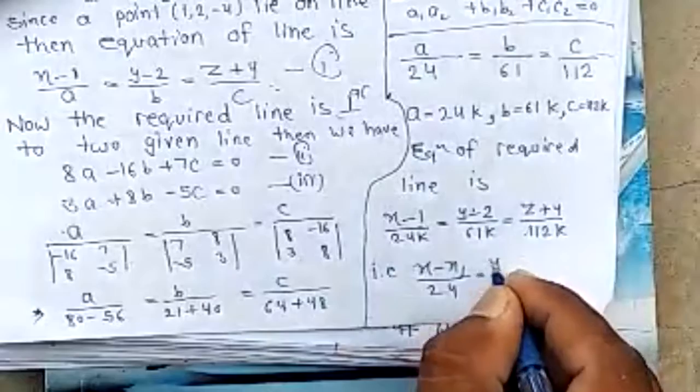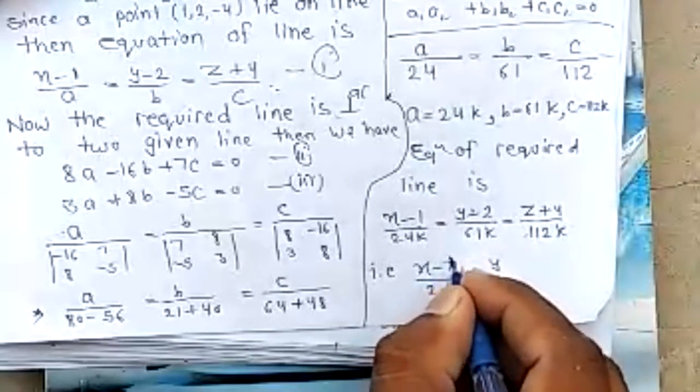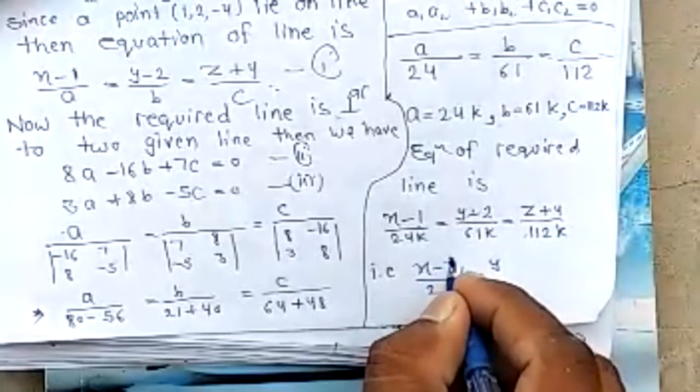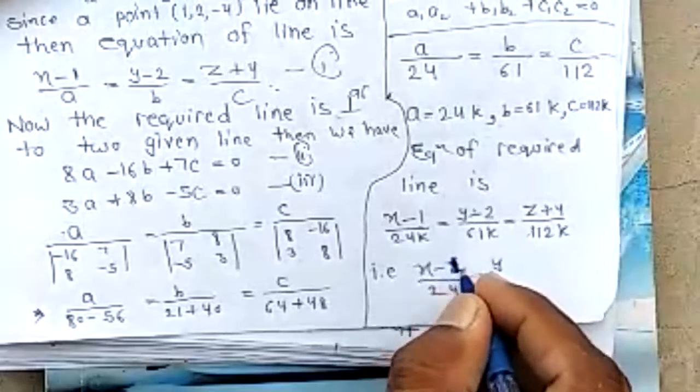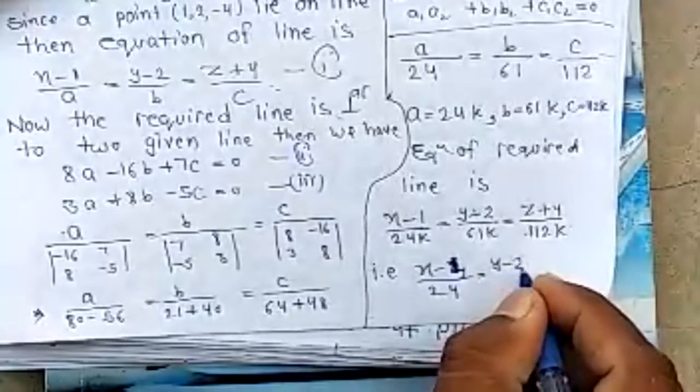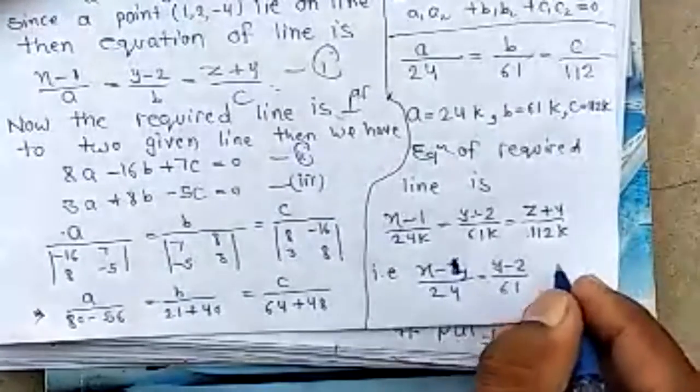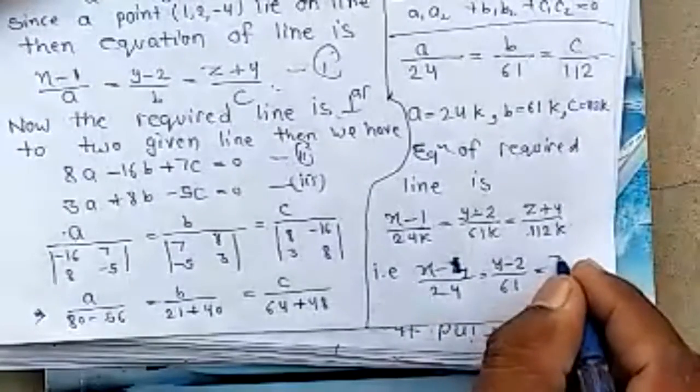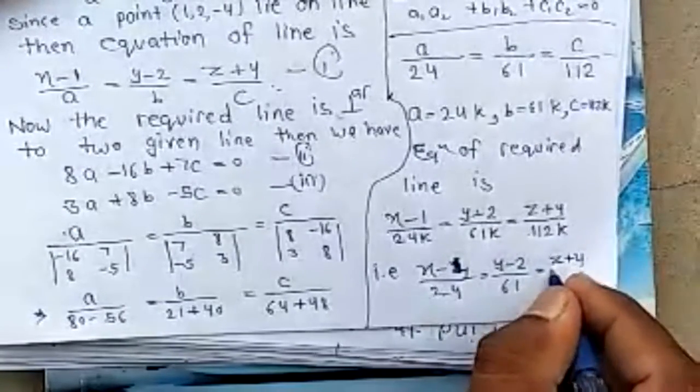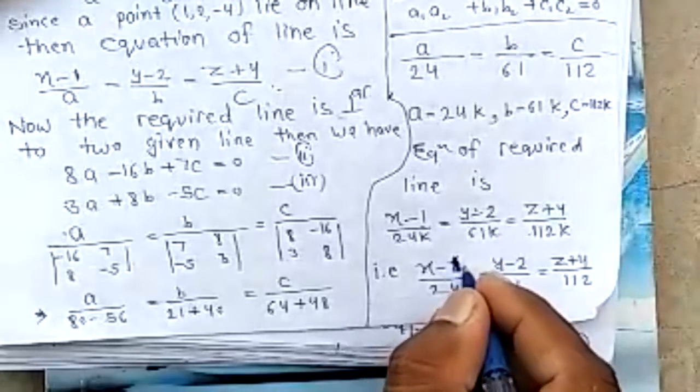y minus 2 by 61, z plus 4 by 112. This is the equation of the required line.